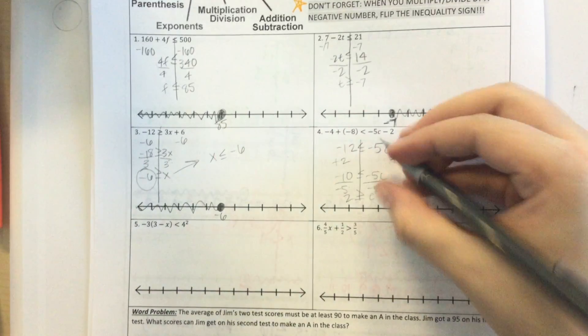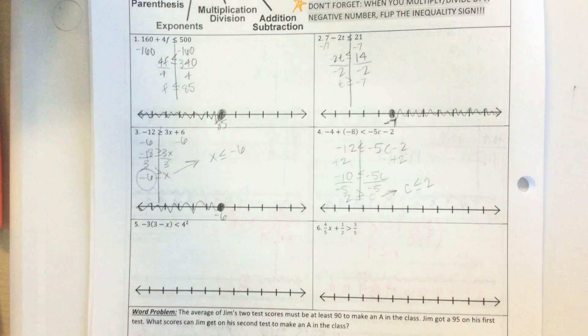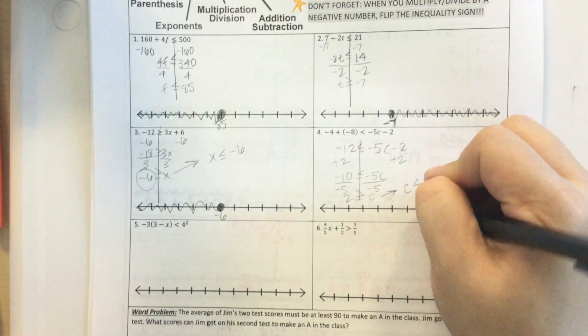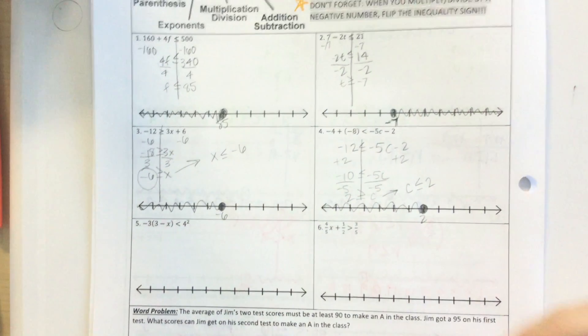Remember, I'm going to rewrite it with the variable on the left. So C is less than or equal to 2. Here's 2. Closed circle. Going to the left.